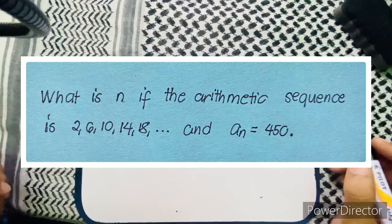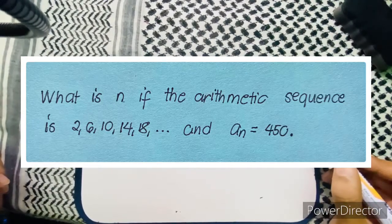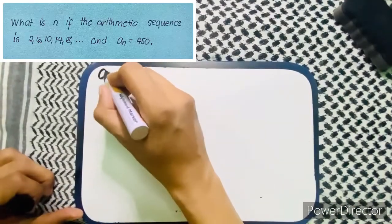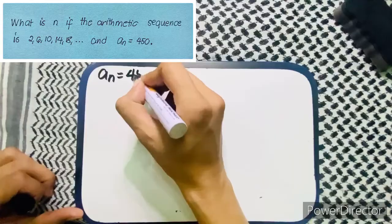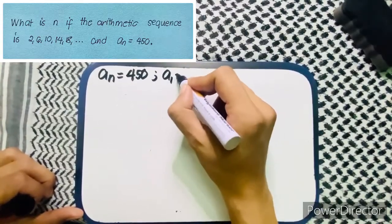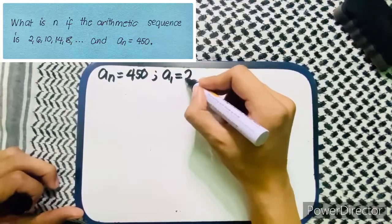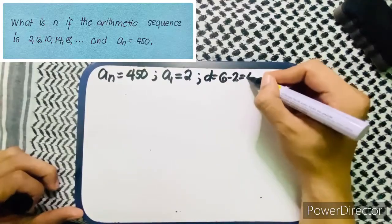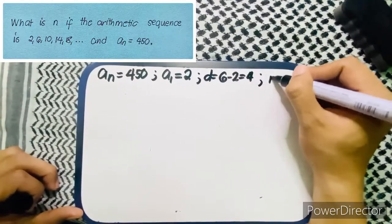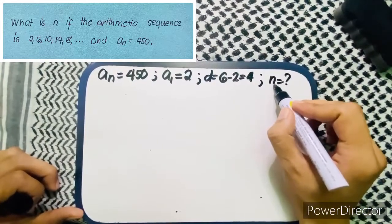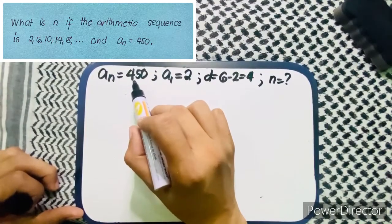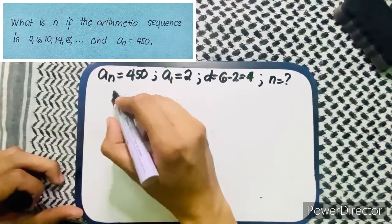For problem number 2, what is n if the arithmetic sequence is 2, 6, 10, 14, 18 and a sub n equals 450? From the problem, a sub n is 450, a sub 1 is 2, and the common difference is 6 minus 2 which is 4. We need to find n — the position of 450 in the arithmetic sequence.